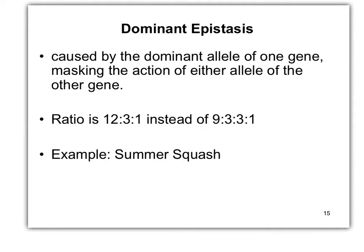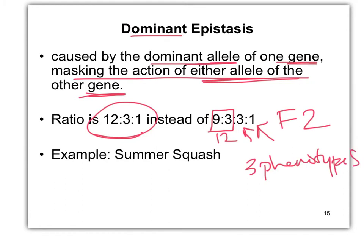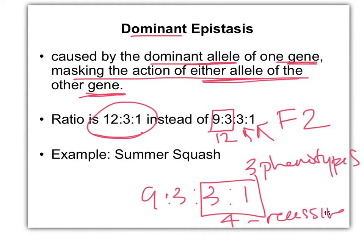What about dominant epistasis? A dominant allele of one gene masks the action of either allele of the other gene — a classic gene interaction. The classic F2 phenotypic ratio is 12:3:1. One of the 9 and one of the 3 categories come together to make 12, the other is 3, and the third is 1 — so three phenotypes. The example is colors in summer squash.